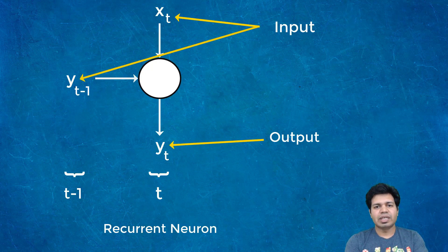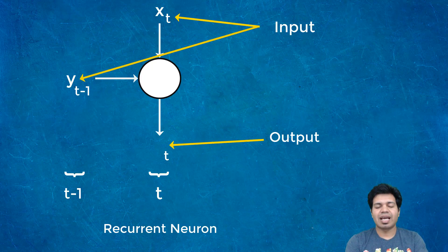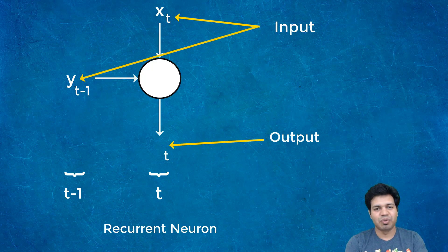This simple tweak is what makes this simple feed-forward network a recurrent neuron, making it able to learn from the past. Let's revisit: Y of T is the output at a given time T, and the value of this Y of T depends on Y of T minus 1, which is the output of the previous time step, and X of T, which are new inputs or features that are only available at the current time step T.